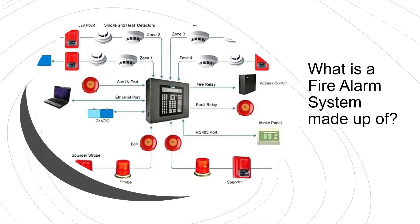A fire alarm system consists of mainly nine items: fire alarm control panel; fire detectors like smoke and heat detectors; fire alarm modules like relay, control and monitoring modules; manual call points (MCP); sounders and flashers; mimic panels or graphic station; emergency telephone; battery and charger; and centralized alarm monitoring system.